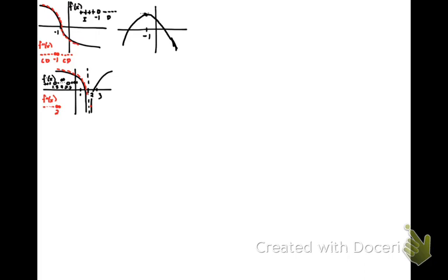After 2, our tangent lines have positive slopes. So we would expect our graph to be increasing until 1.5, decreasing until 2.5, and then increasing after 2.5. We would also expect a change in concavity — it should be concave down before 2 and concave up after 2.